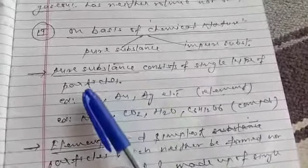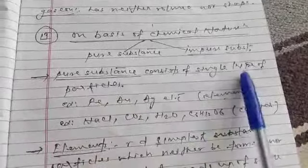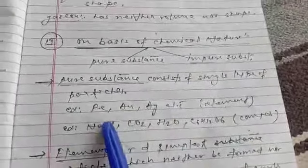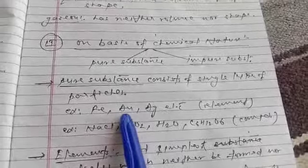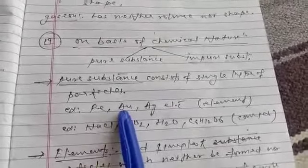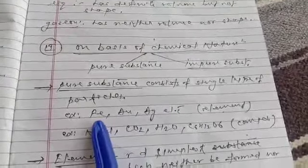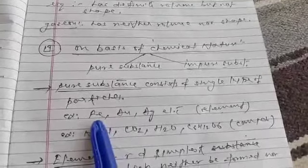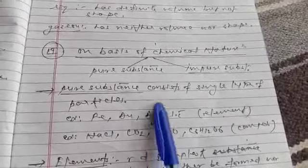Gold - Au. The Latin name is Aurum. Fe is Ferrum - iron. Argentum is silver, denoted by Ag. Like NaCl - sodium chloride, CO2 - carbon dioxide, H2O - water, glucose - these are compounds.